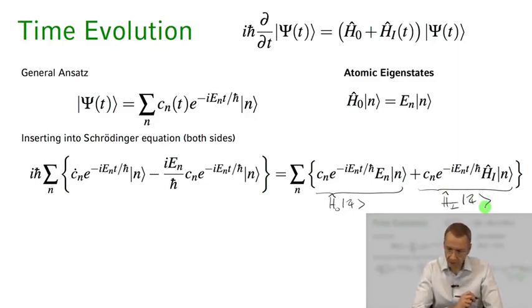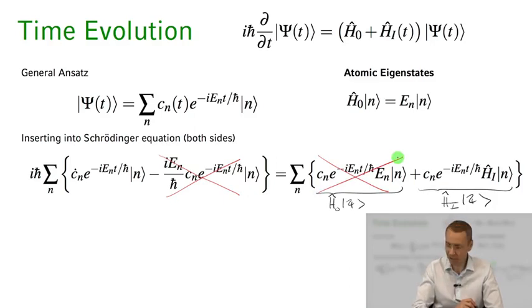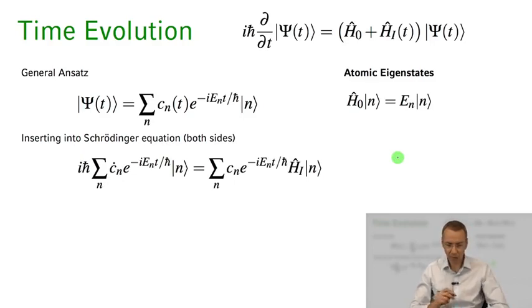Now if we take a look at this equation we see that this term here together with the iℏ in front is actually the same as this term here, so they actually exactly cancel. This term here and this term here cancel, they are exactly the same, they appear on both sides of our equation. Throwing that away dramatically simplifies our differential equation for the coefficient cn.